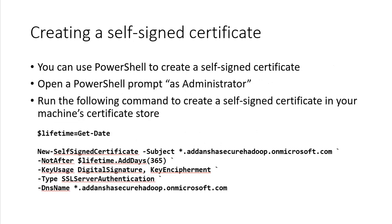To create the self-signed certificate, you can use PowerShell. Open PowerShell as an admin and run the New-SelfSignedCertificate command. Provide a wildcard name, set the lifetime using Get-Date, specify the purpose and CNAME. The command is shown here so you can use it as needed.